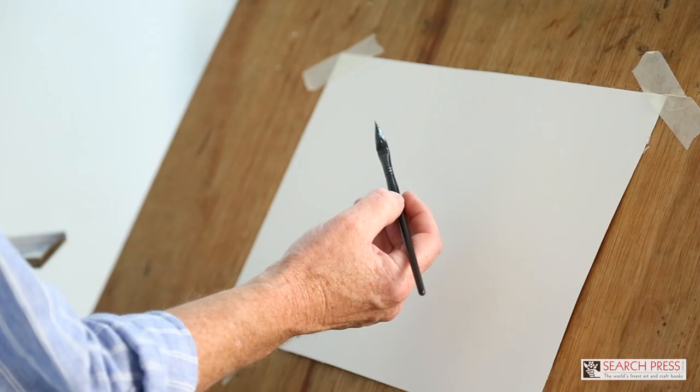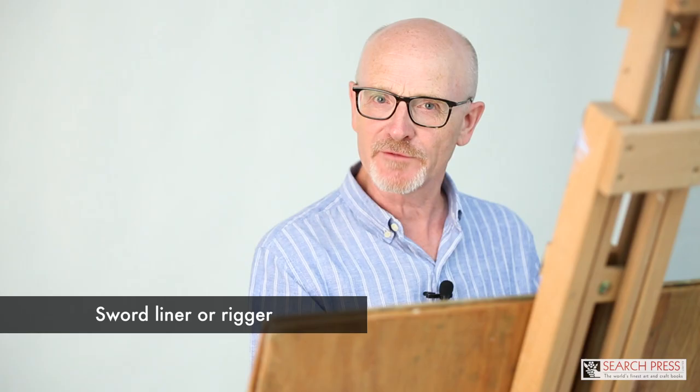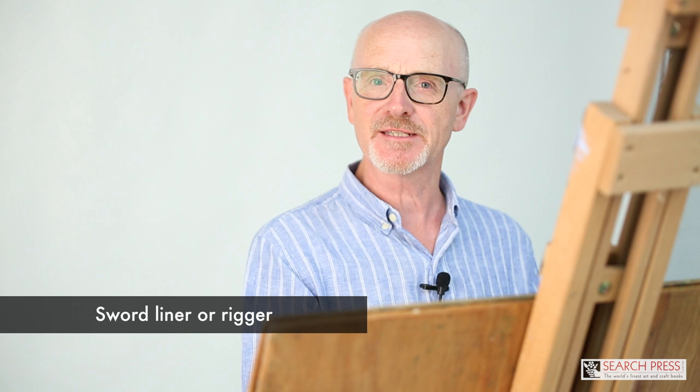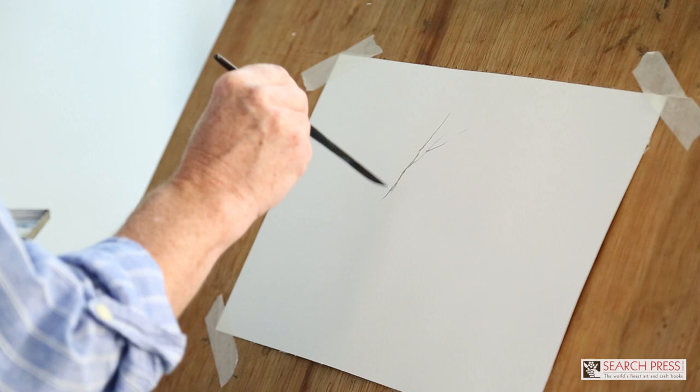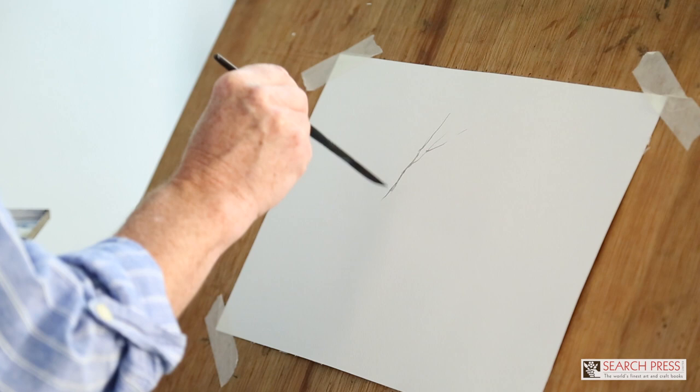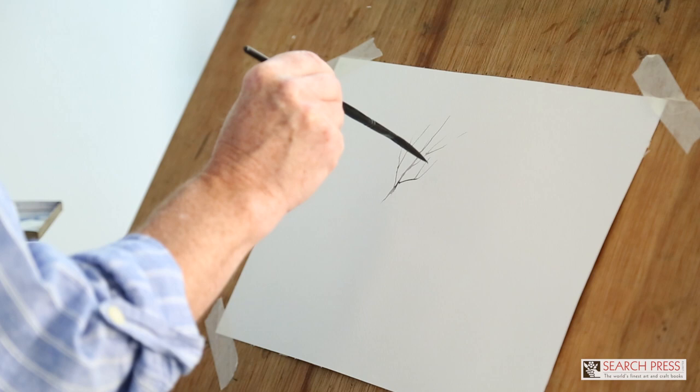Our final brush is a sword liner. This is a rather unusual brush, but it's ideal for doing little winter twigs and things like that. If you can't get hold of a sword liner, a rigger will do much the same job. But it's really, really good for these little twiggy marks. It'll do the finest line, and with a little bit more pressure, it will do the broader branches. It just skips over the paper, making it very easy to get that winter tree look.